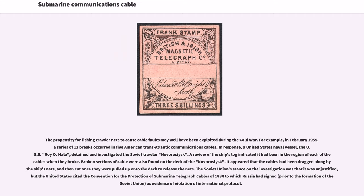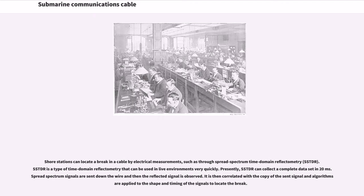The Soviet Union's stance on the investigation was that it was unjustified, but the United States cited the Convention for the Protection of Submarine Telegraph Cables of 1884, to which Russia had signed, as evidence of violation of international protocol. Shore stations can locate a break in a cable by electrical measurements, such as through spread-spectrum time-domain reflectometry. SSTDR is a type of time-domain reflectometry that can be used in live environments very quickly; presently, SSTDR can collect a complete data set in 20 ms. Spread-spectrum signals are sent down the wire and the reflected signal is observed, then correlated with the copy of the sent signal, and algorithms are applied to the shape and timing of the signals to locate the break.